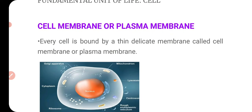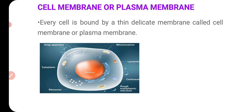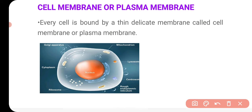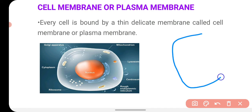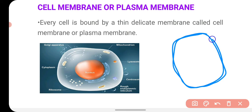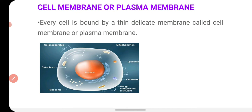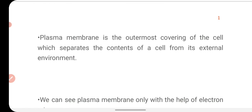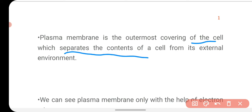If you see any cell, you will find that there is an outermost layer present in the cell and that outermost layer is called the cell membrane or plasma membrane. It makes the outermost boundary of the cell, and because it is the outermost covering of the cell, it separates the content of a cell from its external environment.